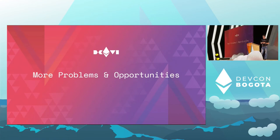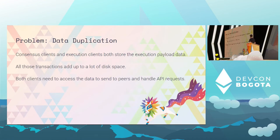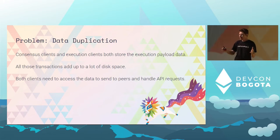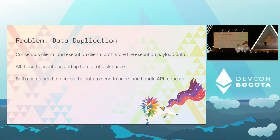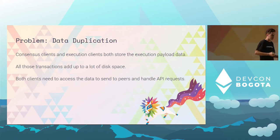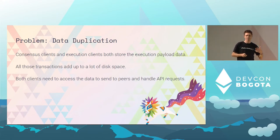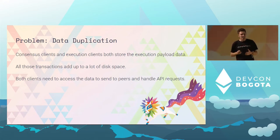Beyond the initial deployment, one of the other problems we now have because of the merge is a bunch of data duplication. The consensus client blocks include the execution payload, which is what your execution client sees as a block. By default, both clients wind up storing that data — so we've duplicated the execution payload, which contains all the transactions. It's pretty big, and that increases our disk space requirements overall. You'll probably see your beacon node's database grow in size faster post-merge than it did pre-merge because of this extra transaction data.